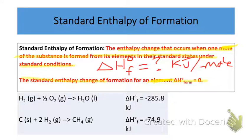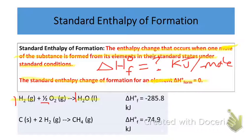For example, let's look at liquid water being formed. According to our definition, we can only form one mole of water. We form that one mole out of its elements: hydrogen, which is H2 gas (diatomic), and oxygen, which is also diatomic O2 gas in its standard state. Because we can only have one mole of water, it requires one mole of H2 and a half mole of O2. When using standard enthalpy of formations, it is okay to use fractions as coefficients. The heat of formation for one mole of water is negative 285.8 kilojoules.